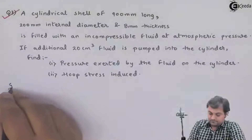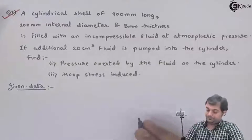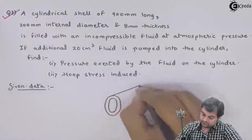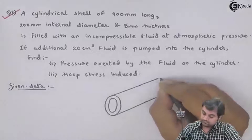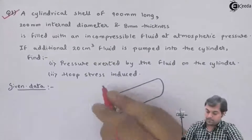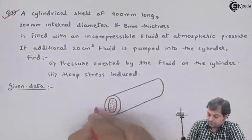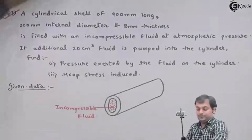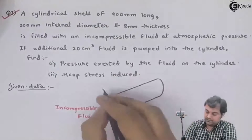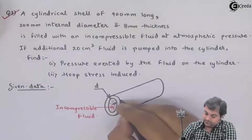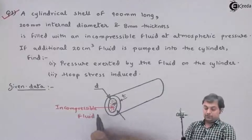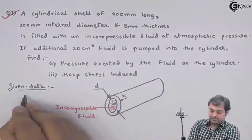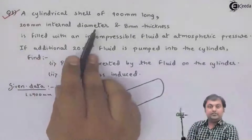Now let us write the data for this question. I will draw the cylinder. This thin cylinder contains incompressible fluid as mentioned in the problem. Small d is the internal diameter for this thin cylinder and small t is the thickness. Reading the question again: a cylindrical shell of 900 mm long — length is given as 900 mm — and 200 mm internal diameter, small d.